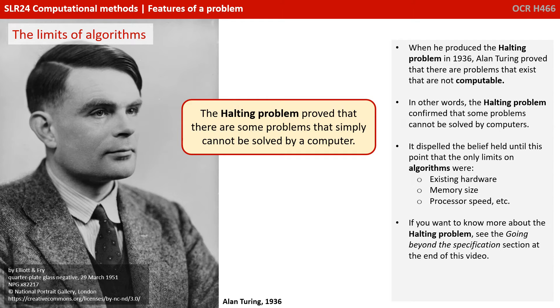When he produced the halting problem in 1936, Alan Turing proved that there are problems that exist that are not computable. In other words, the halting problem confirmed that some problems cannot be solved by computers. It dispelled the belief held until this point that the only limits on algorithms were existing hardware, memory size, and processor speed. If you want to know more about the halting problem, see the going beyond the specification section at the end of this video.